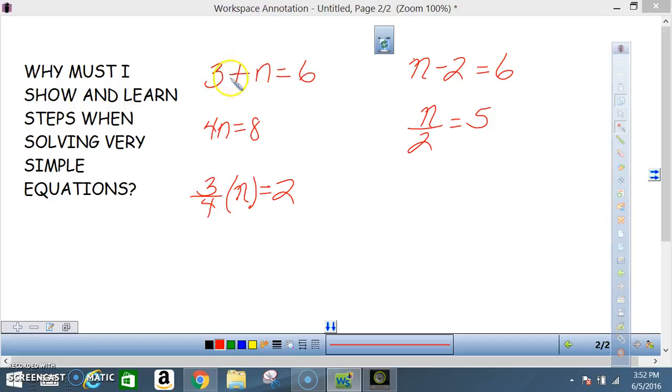So what they want here is this: I got 3 plus n. What operation or what technique must I use to get this n by itself? I must add a negative 3 to both sides. That's what you're learning in this particular lesson - to add that negative 3 to both sides.